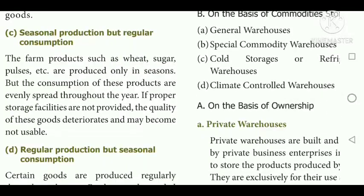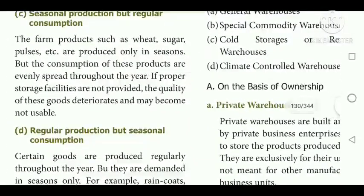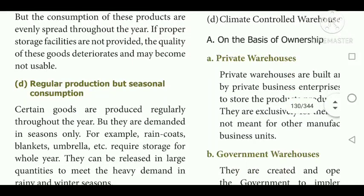Third: seasonal production but regular consumption — some goods like wheat, sugar, and pulses are consumed regularly but produced only in a season. During that season they are produced and stored in a warehouse, and used throughout the year. Fourth: regular production but seasonal consumption — certain goods are produced regularly throughout the year but are demanded only in a season. Examples are raincoats, blankets, and umbrellas, which are consumed only in the rainy season.